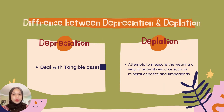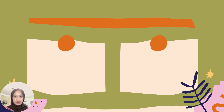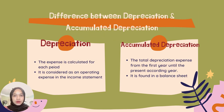Now we have to know the difference between depreciation and depletion. Depreciation deals with tangible assets, but depletion attempts to measure the wearing away of natural resources such as mineral deposits and timberlands. After that, we must know the difference between depreciation and accumulated depreciation.